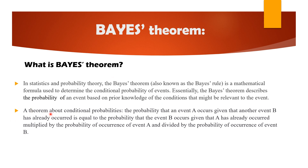Bayes theorem is a theorem about conditional probabilities. The probability that event A occurs, given that another event B has already occurred, is equal to the probability that event B occurs given A has already occurred, multiplied by the probability of event A, and divided by the probability of event B.